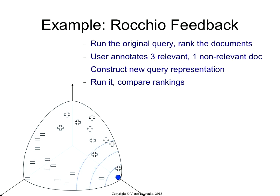So the initial ranking is not very good. What happens if the user marks some documents? Suppose the user marks four top documents: these three are relevant, this one is non-relevant. What happens graphically when you run Rocchio? You compute the average relevant document — that's the positive centroid — and the average non-relevant document — that's the negative centroid. Then you interpolate between the positive centroid and the query and subtract the negative centroid.